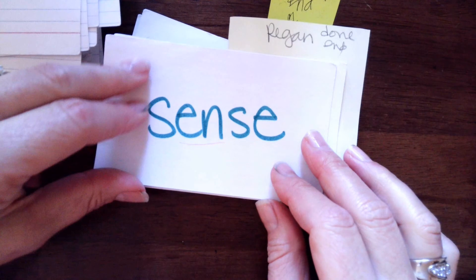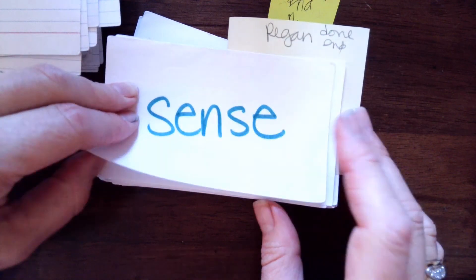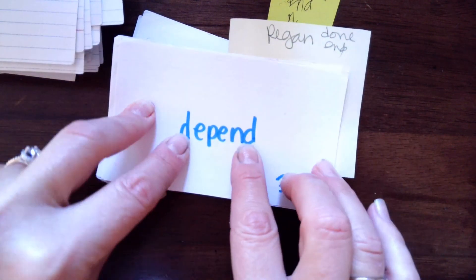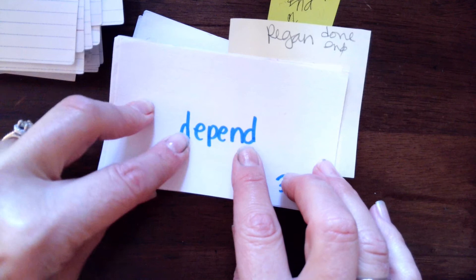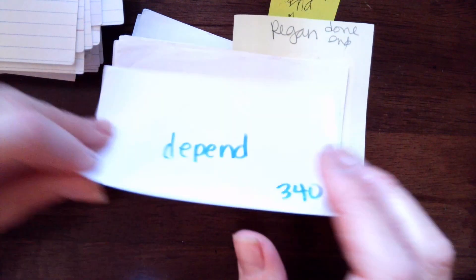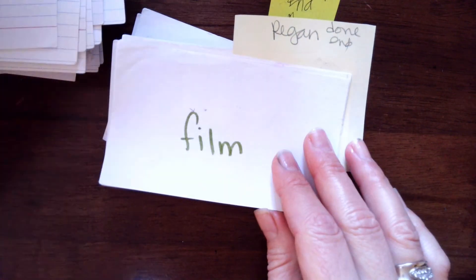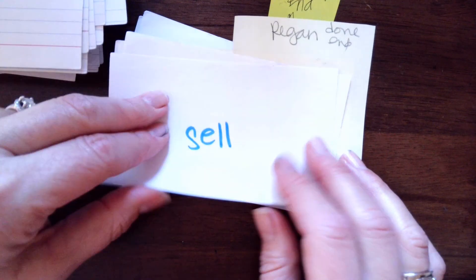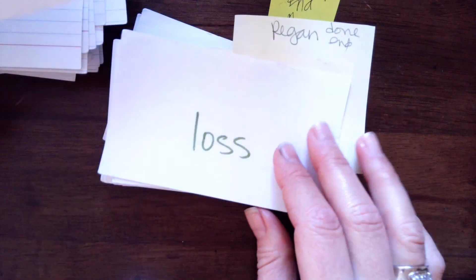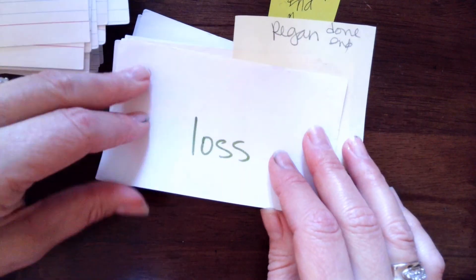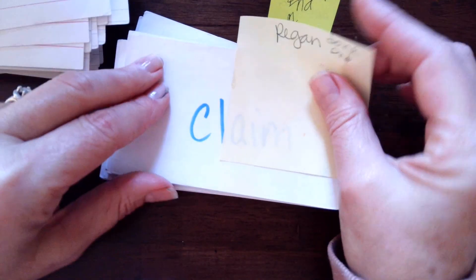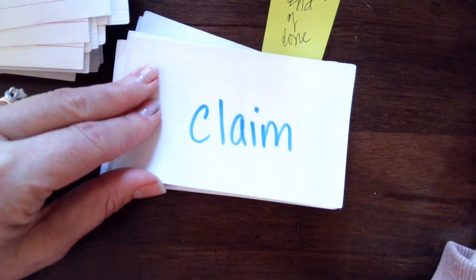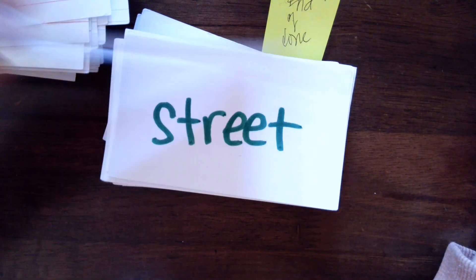Public, public. Sense, sense. Check if it's a B or a D — both of these are D's. De-ep-end — depend. Film, film. Sell, sell. Loss, loss. AI makes a — kuh, l, aim — claim.